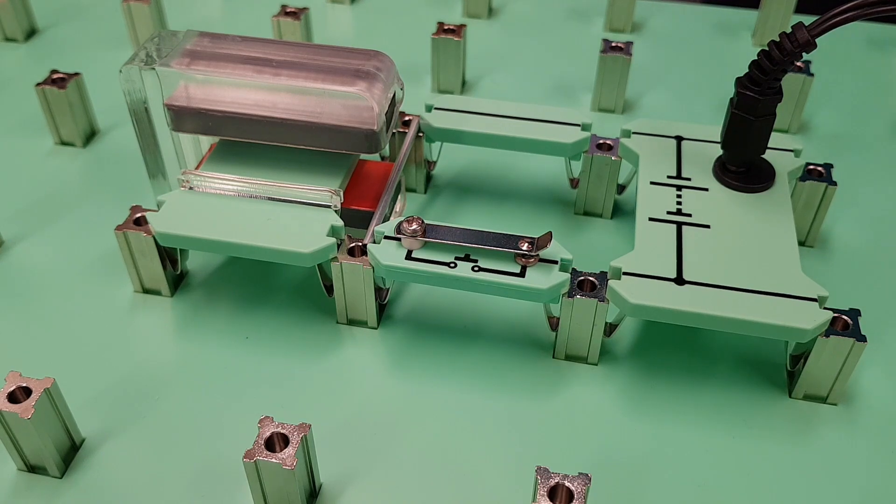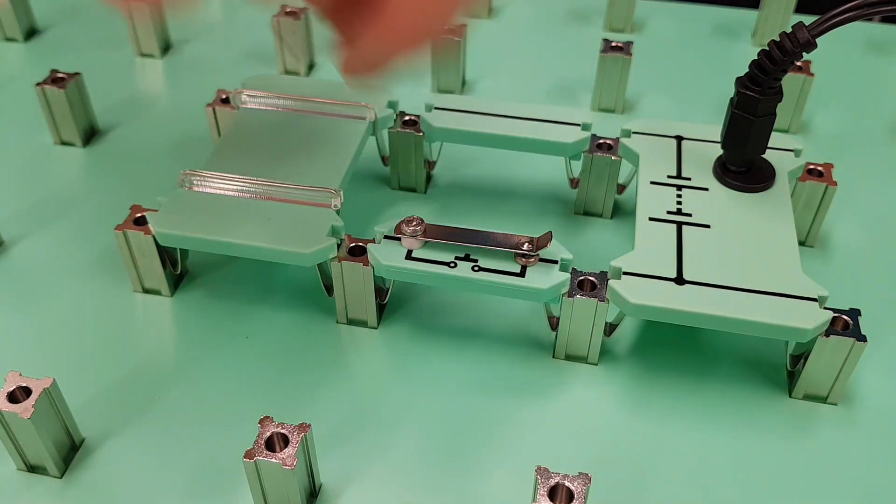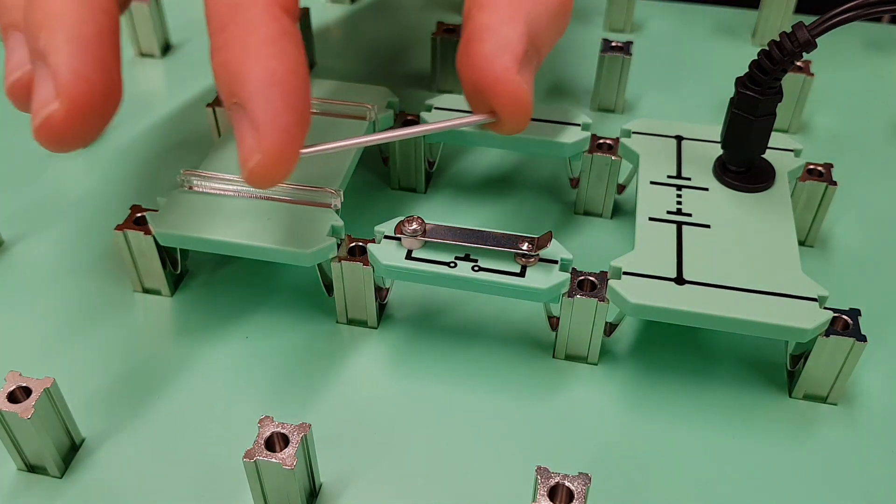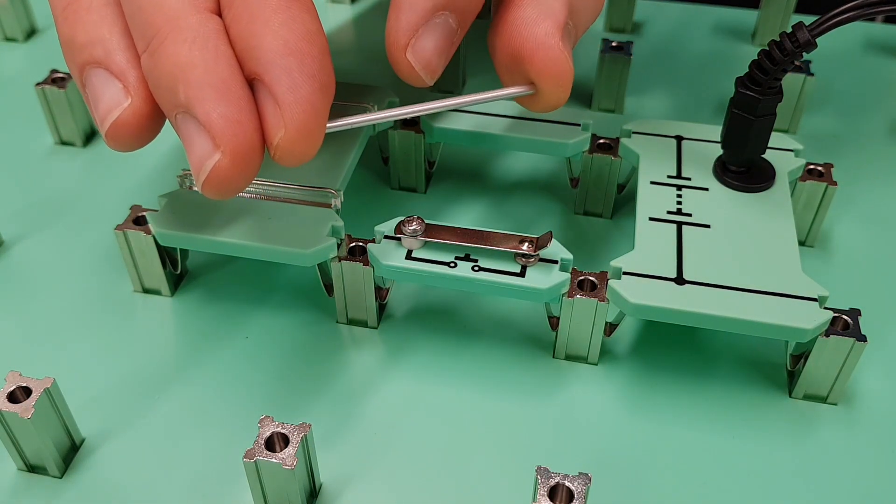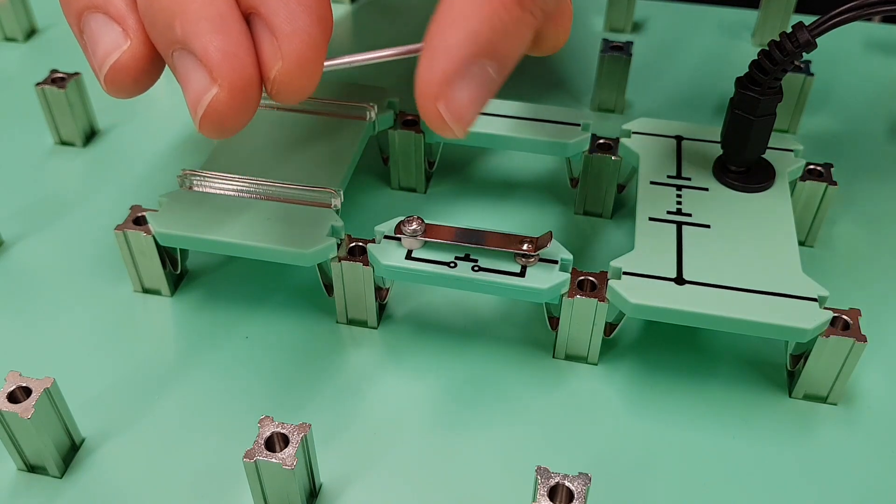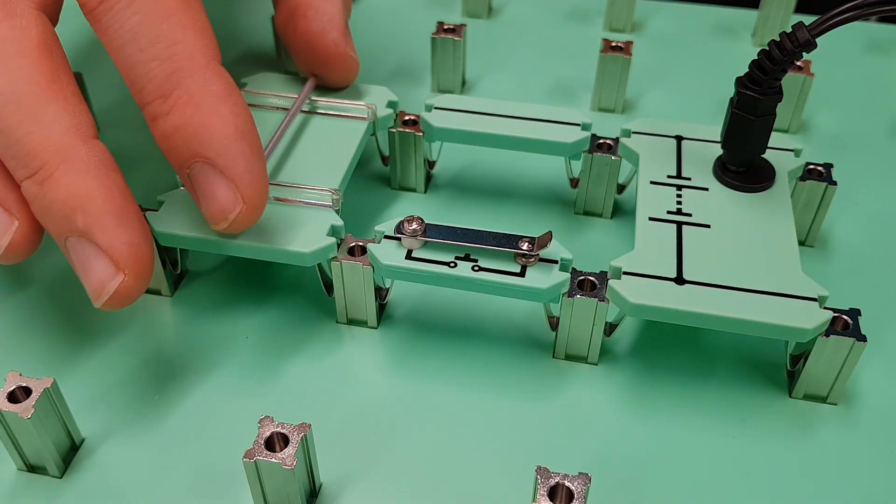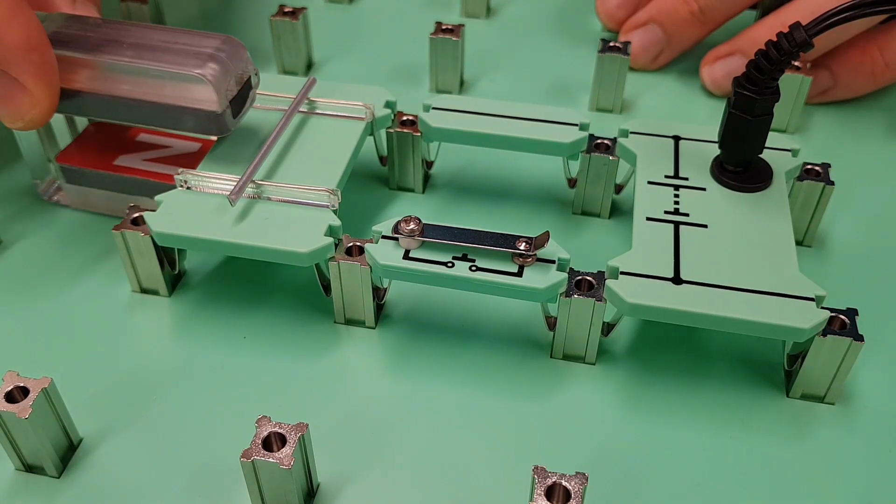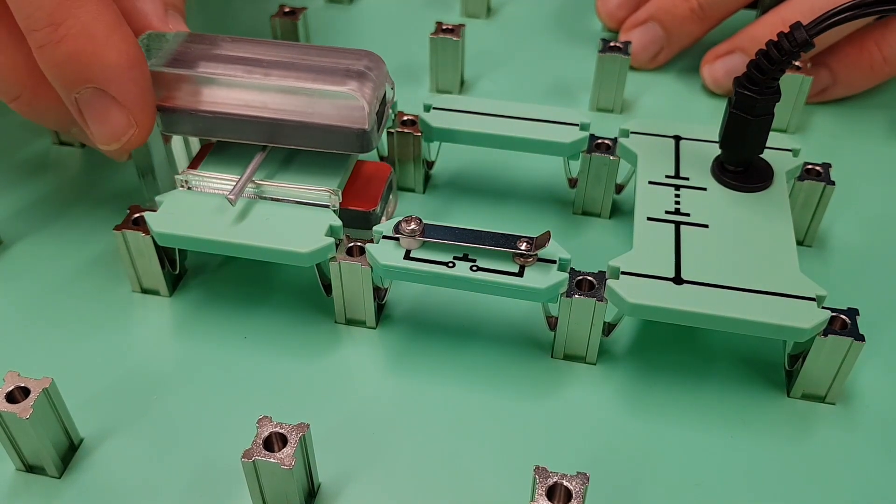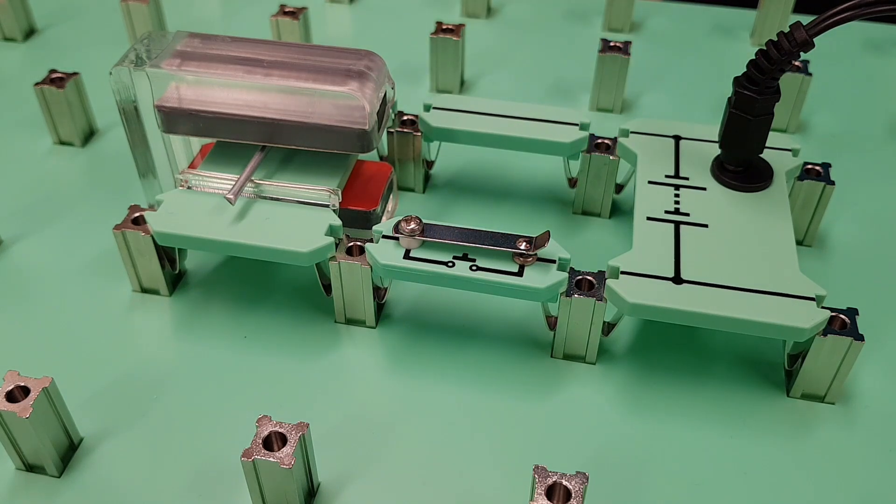So why does the conductor move like that when we place it inside the magnetic field and run a current through it? Well what we need to remember is that inside the conductor, when we pass current through there a magnetic field is generated. And that magnetic field will surround the conductor around the outside. Now because we've got there a magnetic field generated by the current passing through the conductor and the magnetic field that is being generated by the permanent magnet, the effect is that those two magnetic fields will interact with each other and that is why the conductor is ejected.